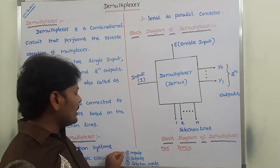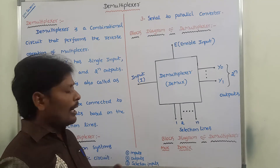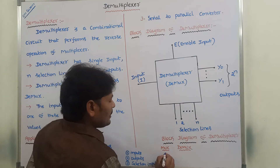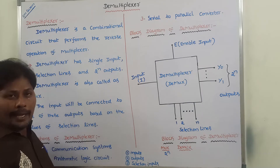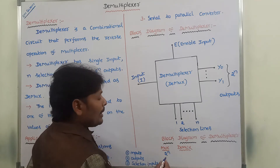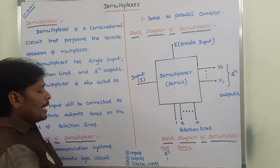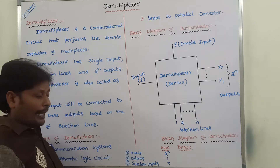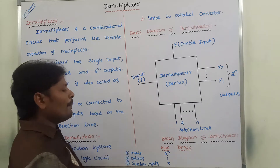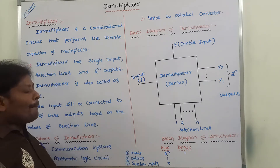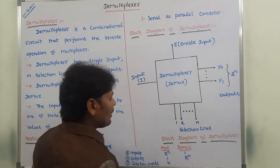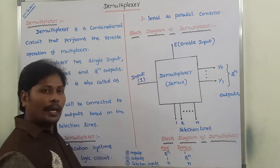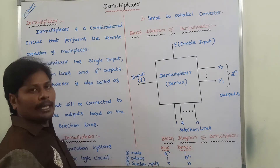First, let's know the differences between multiplexer and demultiplexer by considering three factors: inputs, outputs, and selection inputs. In a multiplexer, the number of inputs is 2^n, the number of outputs is only one, and the number of selection lines required is n. In a demultiplexer, the number of inputs is only one, the number of outputs is 2^n, and the number of selection lines required is n.